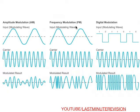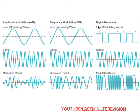Next is frequency modulation. The same input is taken and the carrier is the same. Now depending upon the input, there is a change in the frequency — this is high frequency, this is low frequency. Whenever there is a change in the input, there will be a corresponding change in the modulated signal.